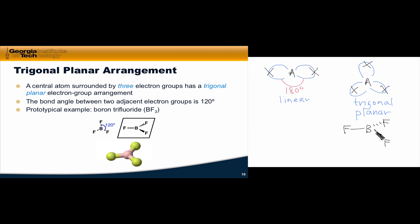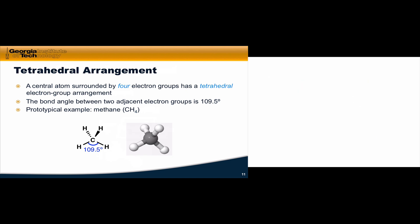For 4 electron groups, we arrive at the tetrahedral arrangement, which is the first that really invokes the third dimension. The tetrahedral arrangement is extremely important to organic chemistry. A tetrahedron is essentially a pyramid with a triangle as its base, with the central atom at the center of the tetrahedron and the peripheral X atoms at the four corners.